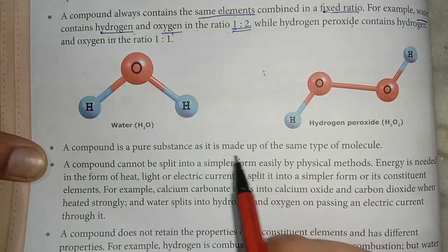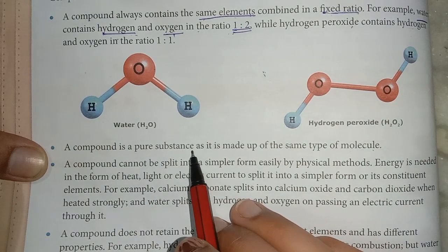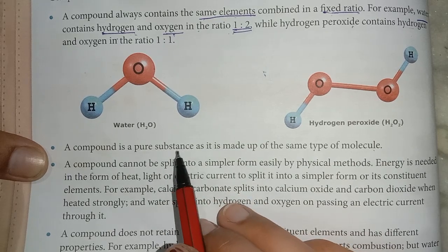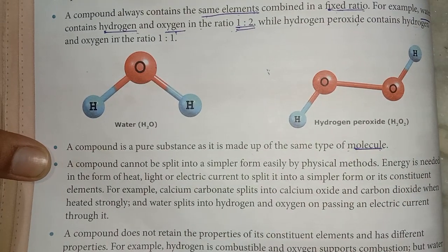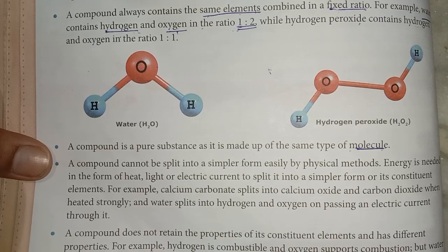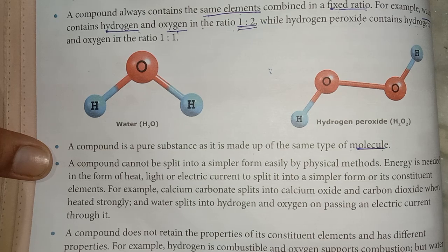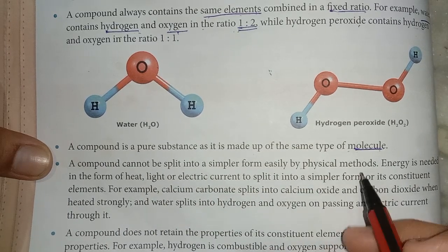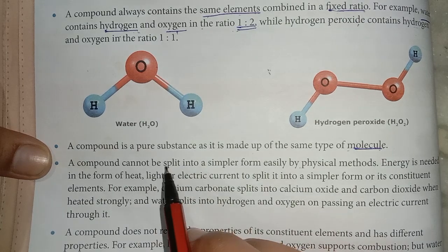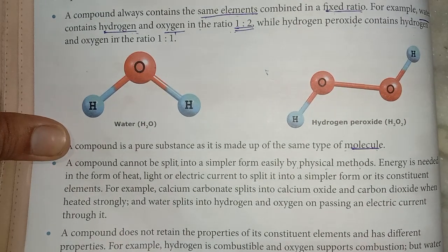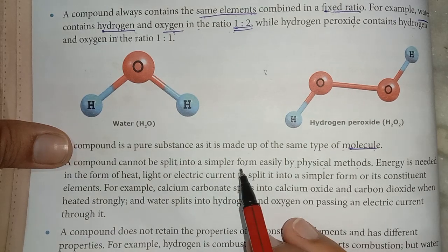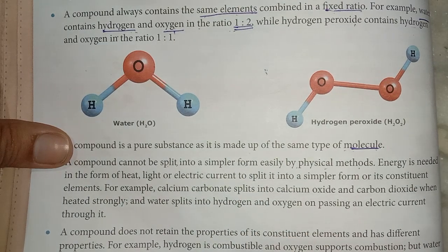A compound is a pure substance made up of the same type of molecules. A compound is also a pure substance because it consists of the same type of molecule. A compound cannot be split into a simpler form easily by physical methods — you cannot use your hands or other physical methods to split it into a simpler form.